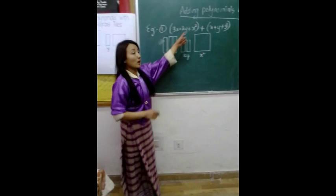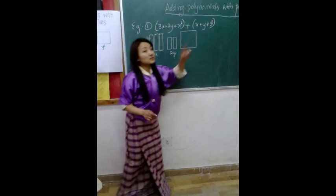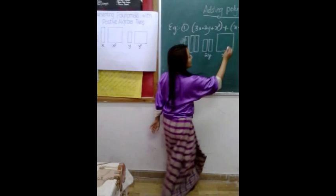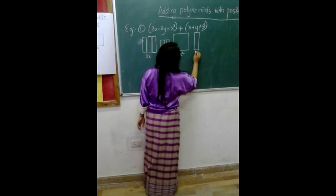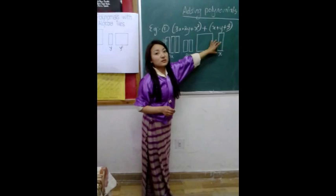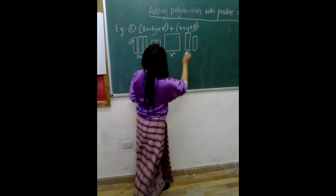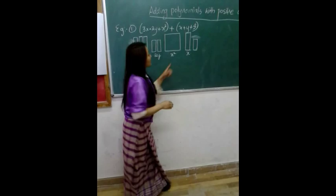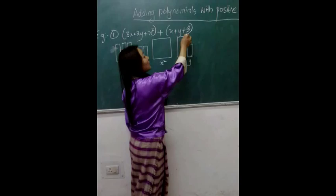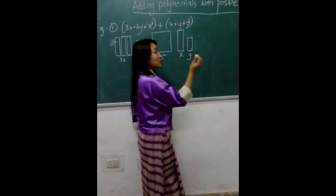Next is X plus Y plus 3. So, X is how many? Only one. X is a rectangular tile. One X. And only one Y — a little bit shorter than X, also a rectangular tile. And now the next is 3. We have got three units — one, two, and three.